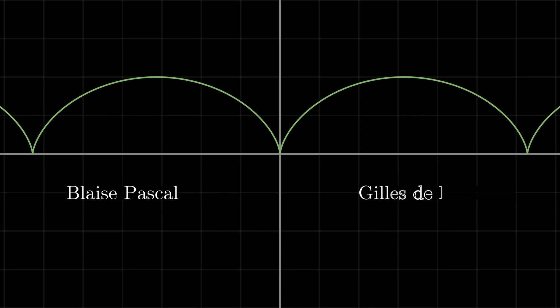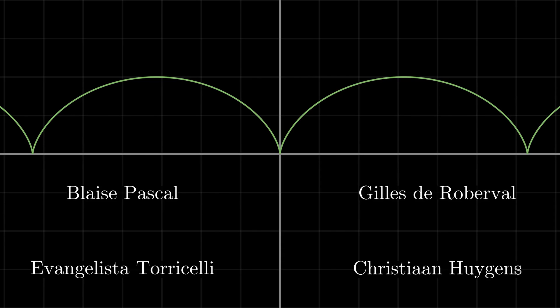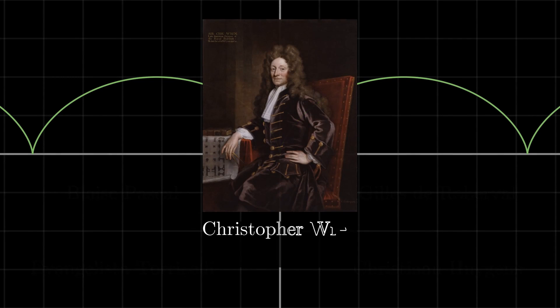Mathematicians including Pascal, Roberval, Torricelli and Huygens came up with different ideas for calculating the arc length of a cycloid. The first published proof of the cycloid's arc length was given by Christopher Wren, a renowned architect and one of the founding members of the Royal Society.